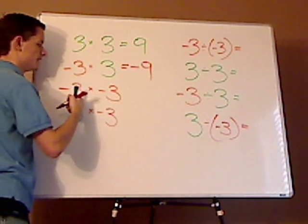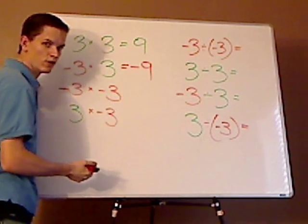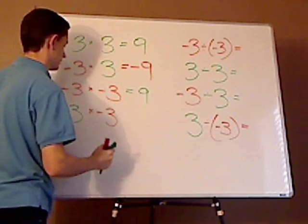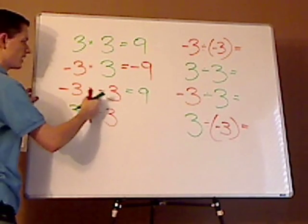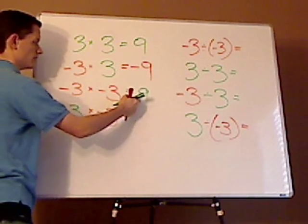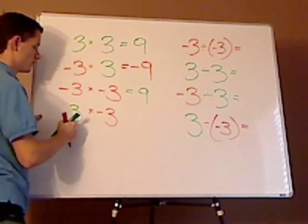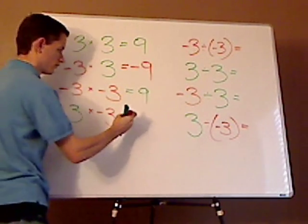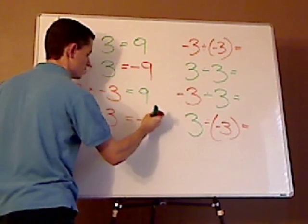Now, if it's a negative times a negative, this would be what? A positive 9. Right? Because the signs are the same, you get a positive number. Positive 3 times a negative 3 would be what? Negative 9.